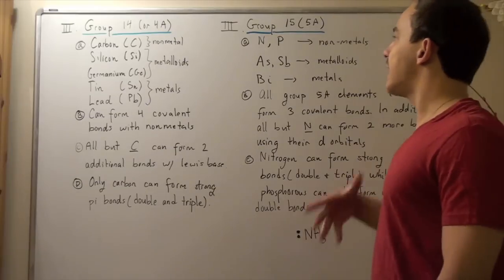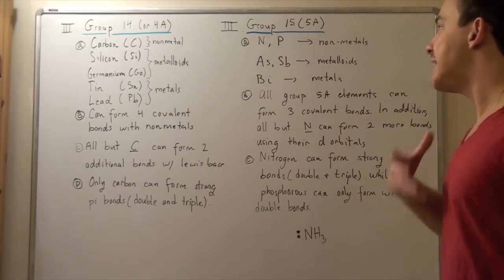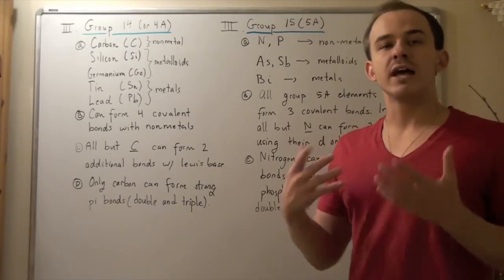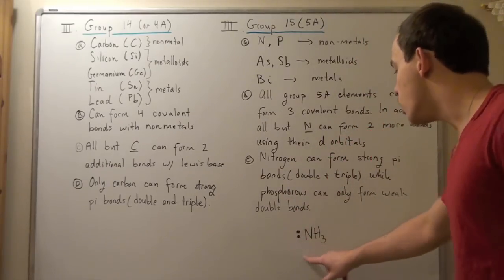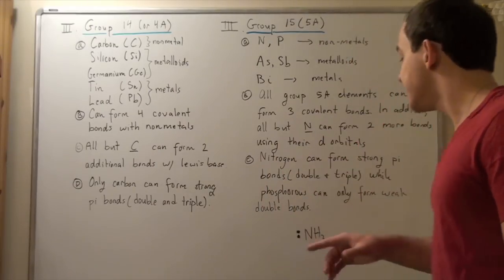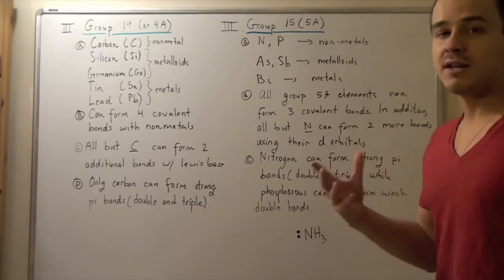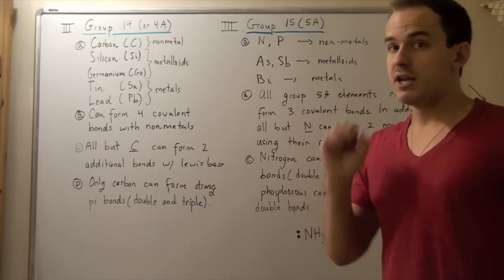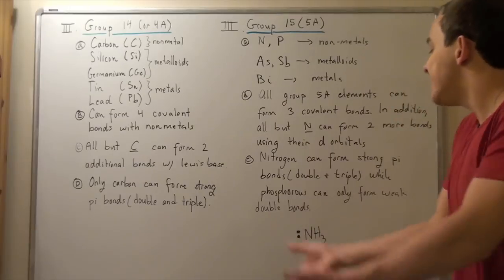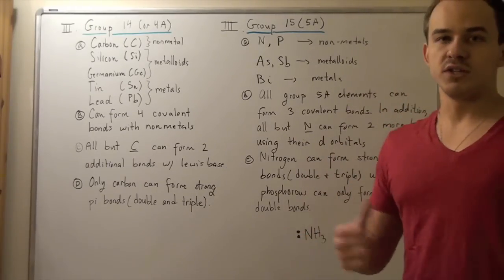Now let's look at one more thing about nitrogen. Normally, when we have nitrogen in a molecule or compound, that nitrogen has a lone pair of electrons — for example, in ammonia. Ammonia can take one more hydrogen because it has a lone pair of electrons. In other words, nitrogen has the capability of forming not three covalent bonds, but four covalent bonds. When nitrogen takes another H, it forms a positively charged compound called ammonium.